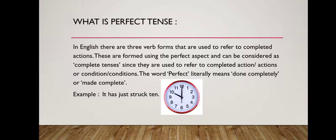What is the structure of perfect tense? Subject, then according to the subject either 'has' or 'have', then the past participle form of the main verb.